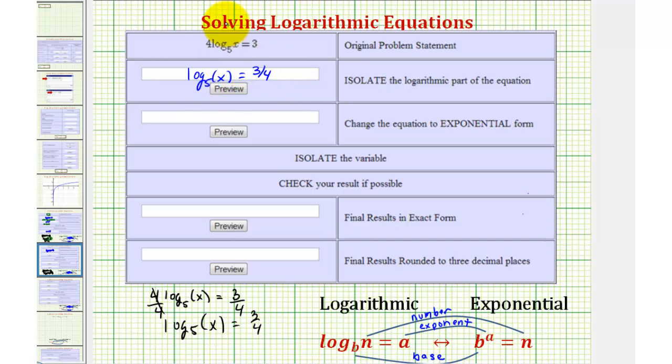There are two ways to enter this. From the keyboard, we can enter log underscore five for the base, then in parentheses x equals three-fourths. And then click the preview button to make sure it's entered correctly.